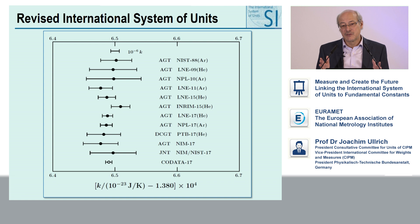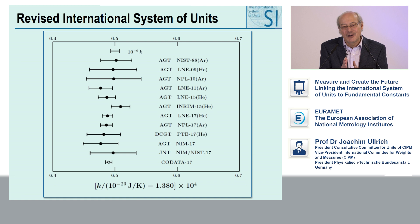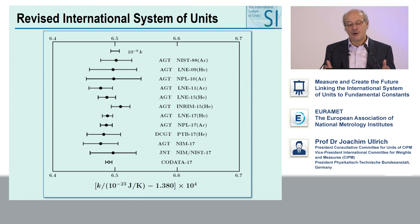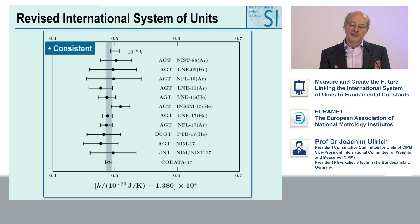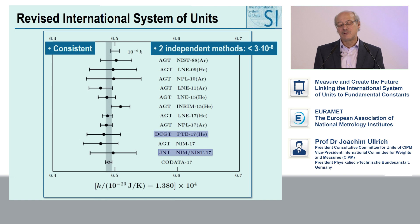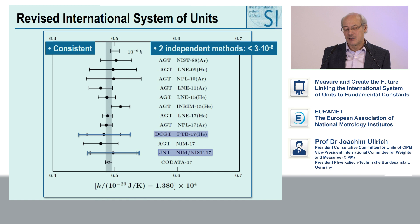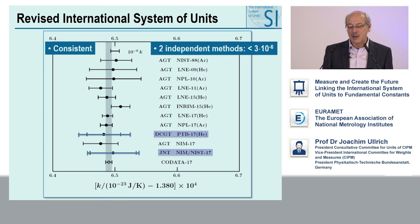At some date, we have to fix the numerical value. The 1st of July was the closing date where all experiments that wanted to contribute to this fixed numerical value had to be published. This is the situation shortly after the 1st of July 2017 for the Boltzmann constant. All these different measurements look very good — the average value shows that all measurements are consistent; they overlap within their uncertainty. We have essentially three independent methods: AGT — acoustic gas thermometry — DCGT — dielectric gas thermometry — and even Josephson noise thermometry.